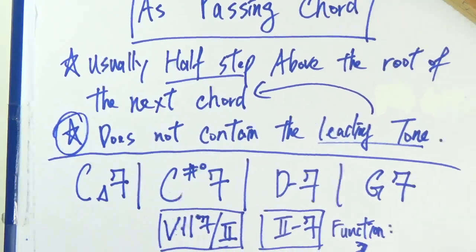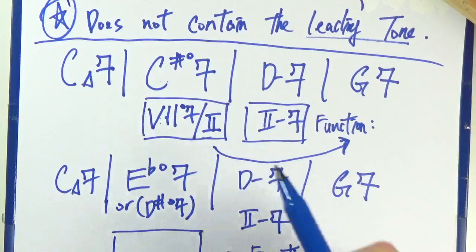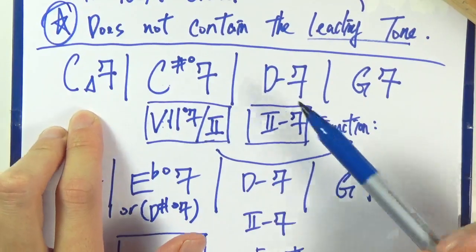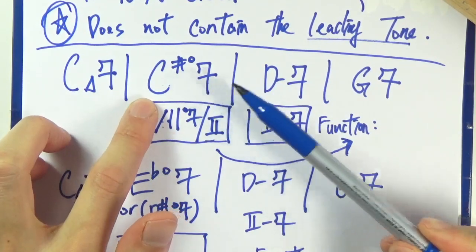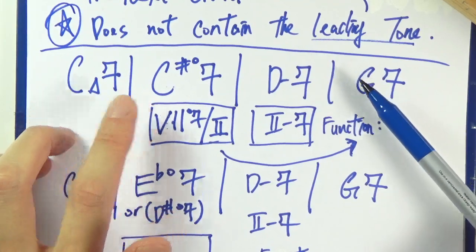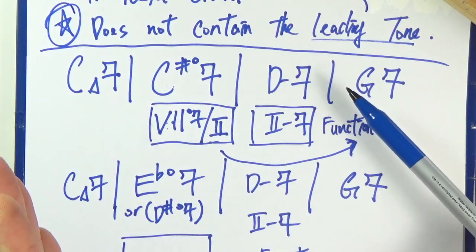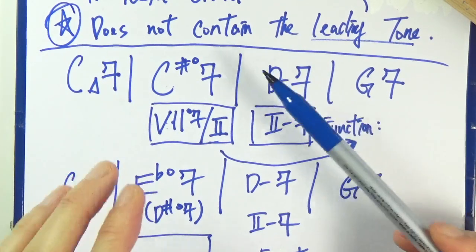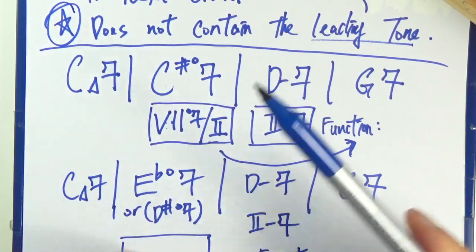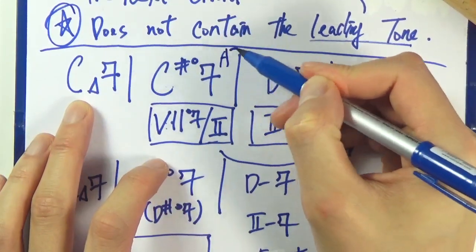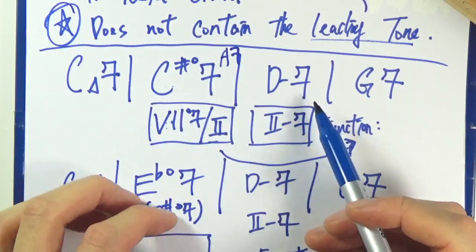So let's take a look at two examples. First example, C major 7, and then you have C sharp diminished 7 going into a D minor 7, and then G7. So this is the example that we have learned in the previous video. So 5-1 situation, not exactly 5-1, but usually you would see an A7 here. So we have a secondary dominant of D minor 7,